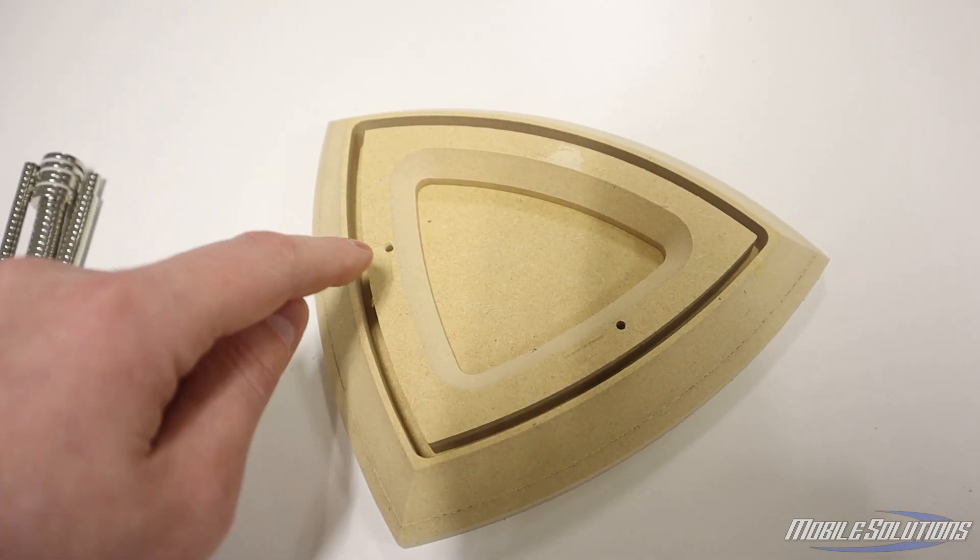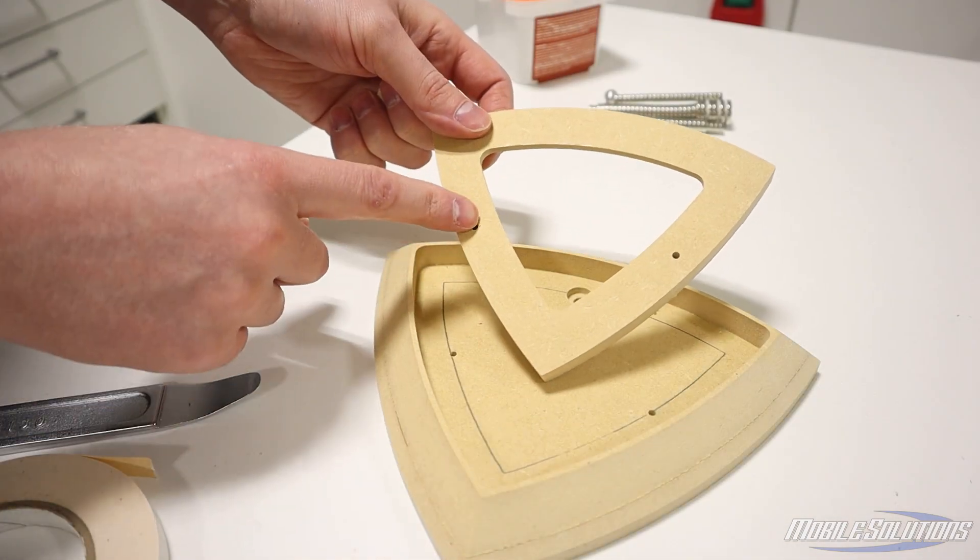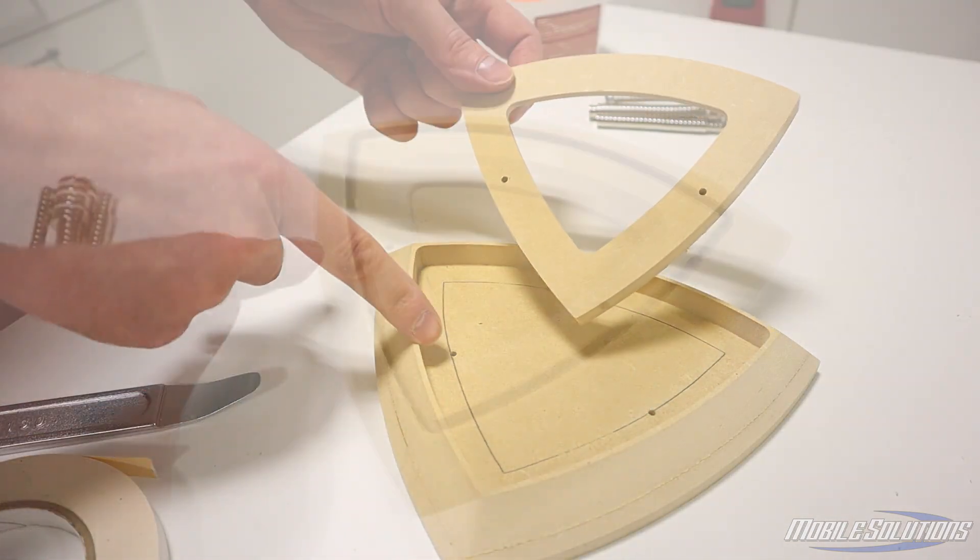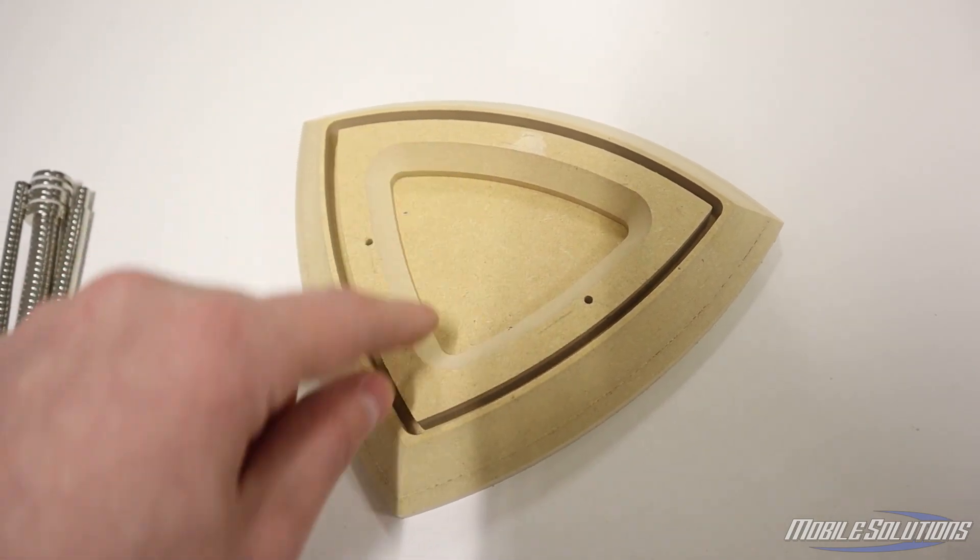Now the purpose of drilling these holes is purely to transfer that hole location from this panel to this panel so that they're perfectly lined up. A lot of times with these odd shapes, it'd be really hard to measure that exact location on each of these panels once they're separated.